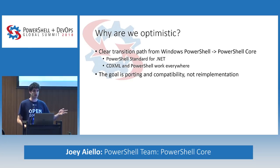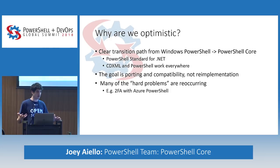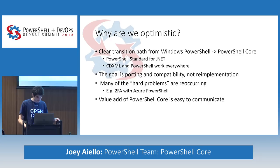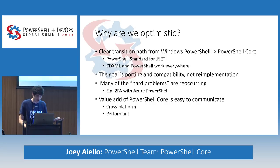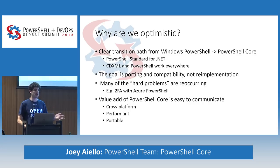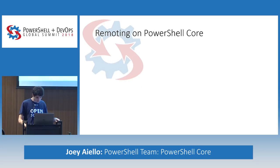The goal is porting and compatibility, not re-implementation. It's not an expensive design decision — just recompile, run your tests on Core, and if it works you're great. Many of the hard problems are reoccurring, so solutions for one team are reproducible for others. The value-add is easy to communicate: cross-platform, Mac and Linux support, up to 60% faster performance due to .NET Core and PowerShell cleanup, portable and simpler to manage in CI/CD, and container images that start up really fast.